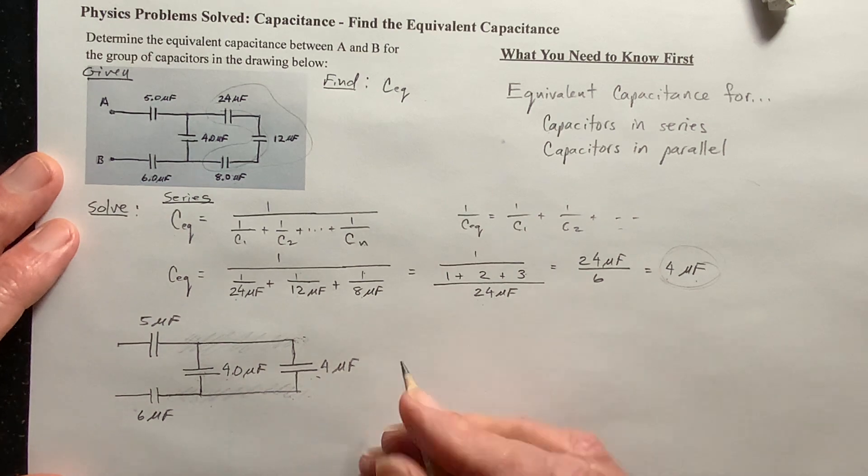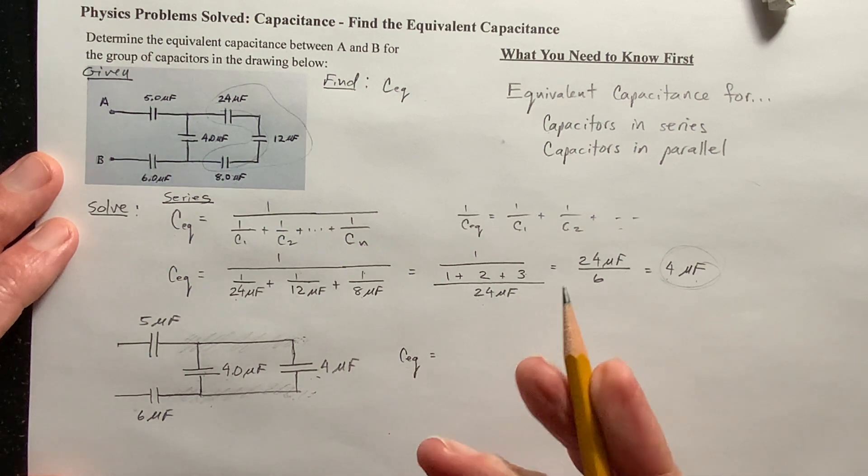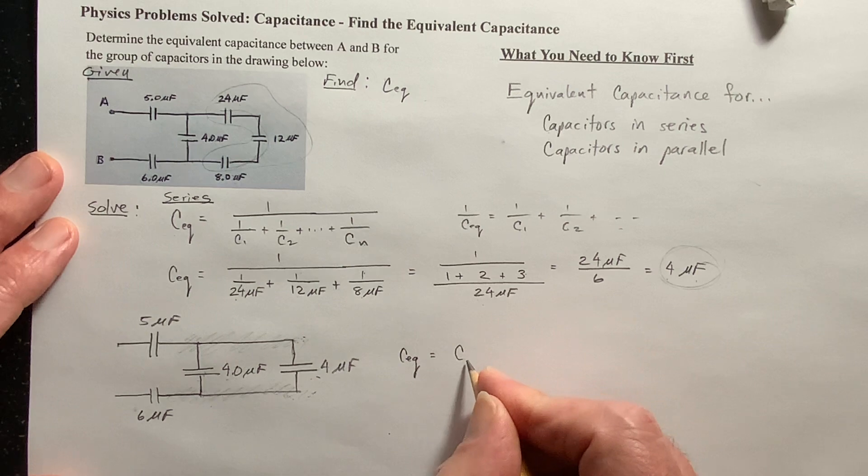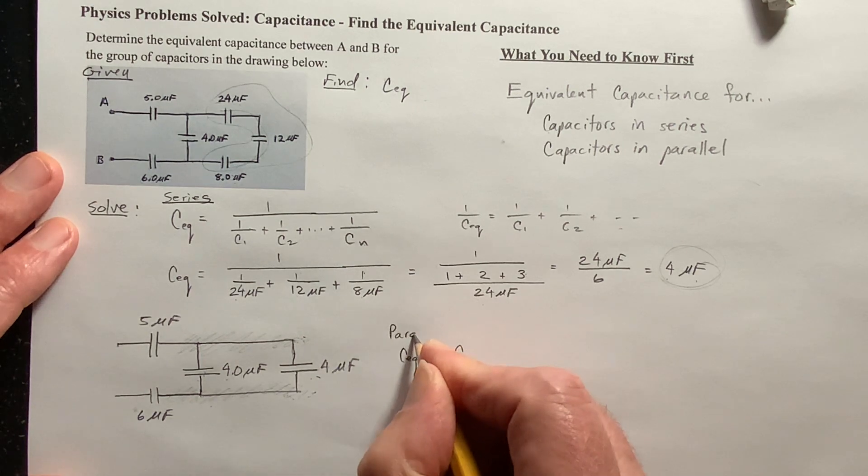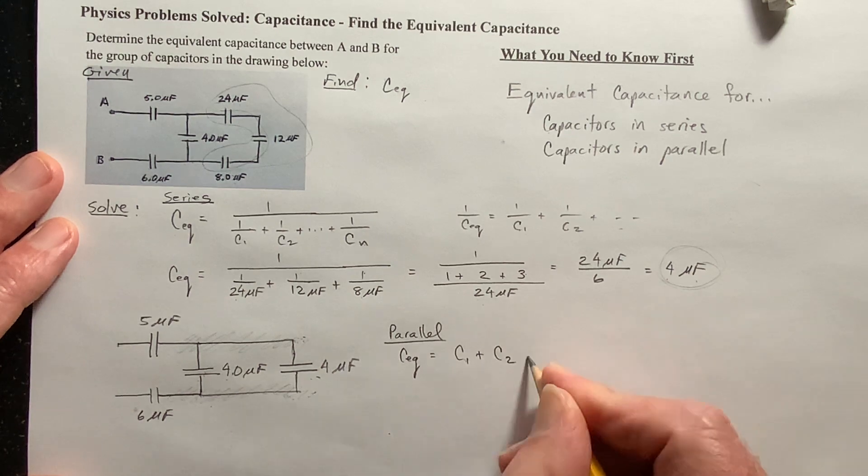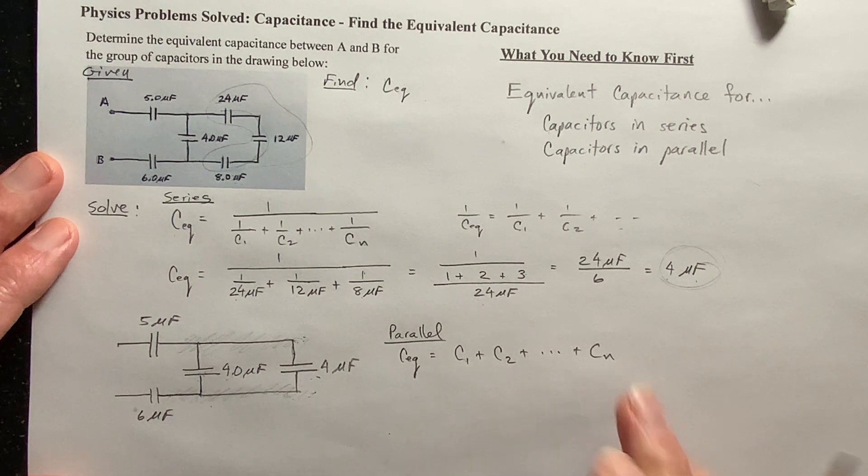Okay. Now, so I'm going to find the equivalent capacitance of those. Now this, since they're in parallel, it's easy. The equivalent capacitance for capacitors that are in parallel, I'll just go ahead and write that up here. It's just C1 plus C2 plus dot, dot, dot, plus Cn, the nth C. Okay.